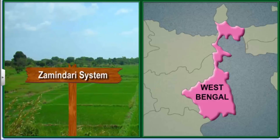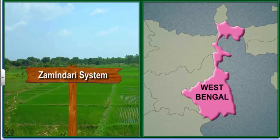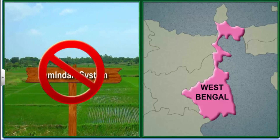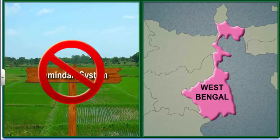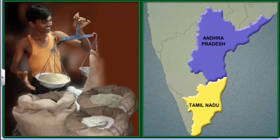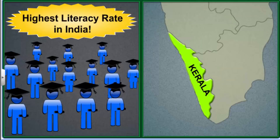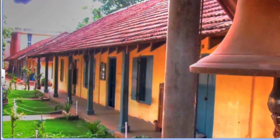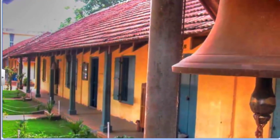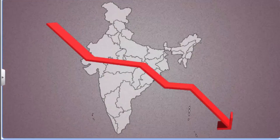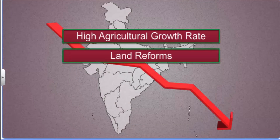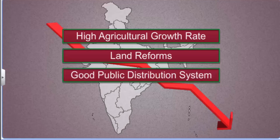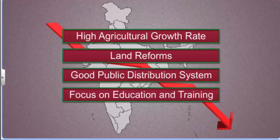In West Bengal, the decline in poverty is associated with land reforms that aim to improve the condition of small farmers and agricultural workers. In Andhra Pradesh and Tamil Nadu, a well-implemented public distribution system of food grains is the likely cause. Kerala has the highest literacy rate in India for both its male and female population, and this focus on education and human resource development has led to the decline in poverty. Thus, high agricultural growth rate, land reforms, good public distribution system and focus on education are some of the ways poverty has been successfully reduced in India.